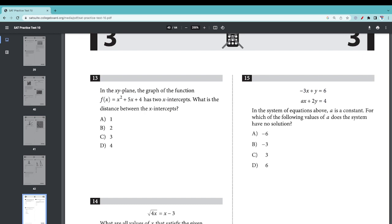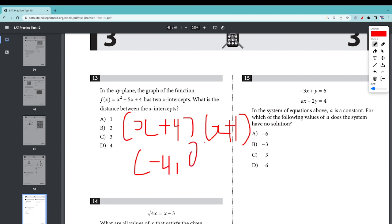Number 13: In the xy plane, the function has two x-intercepts. What is the distance between the two x-intercepts? x-intercepts is when y equals zero. If I factor this out, it's 4 times x plus 4 times x plus 1. This is a point where we have negative 4 and 0, and negative 1 and 0. The distance between negative 1 and negative 4 is 3.